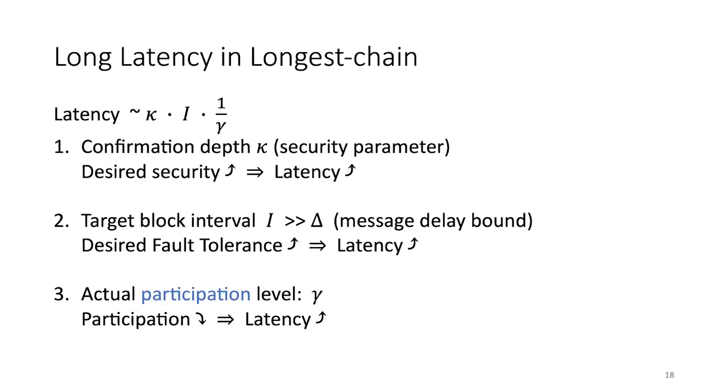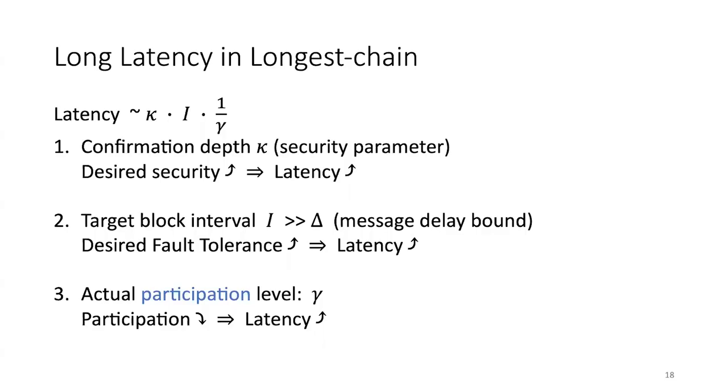The third latency factor is actual participation level. In a Bitcoin-style system you must guess how much computation power is around to set the difficulty for a 10-minute block interval. If suddenly 80% of computation power leaves, you'd have to wait 40–50 minutes per block, so lower-than-expected participation increases latency. Conversely, if participation is much higher than expected, you lose fault tolerance — these two effects are two sides of the same coin.